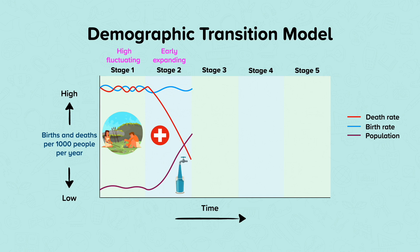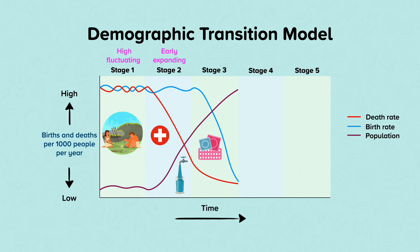Stage three is entered when birth rates start to fall. This happens because health education is much better, contraception is more readily available, and people start to desire smaller families. Fewer children are needed as there is less reliance on agriculture. There is often a rise in the equality of women too, and more opportunities means that many women will have children later in life. During this time the death rate continues to fall, although at a slower rate. Population continues to rise also at a slower rate than stage two. This stage is known as the late expanding, and currently most less economically developed nations are in this stage.